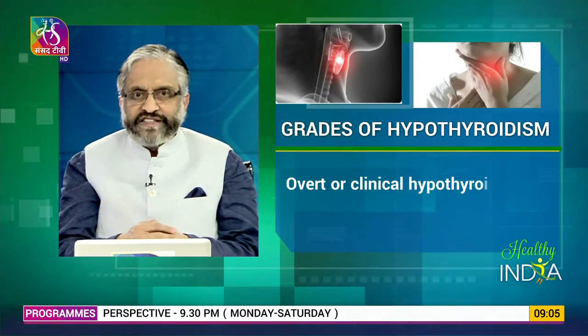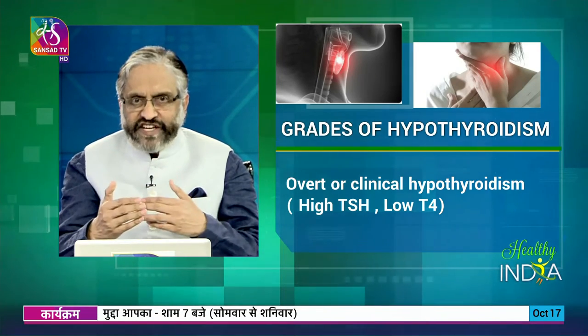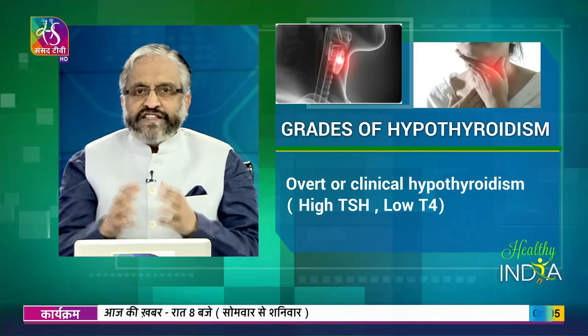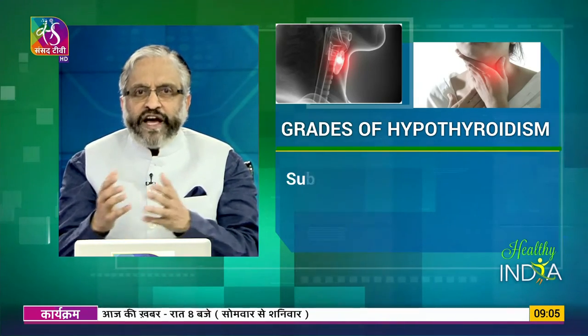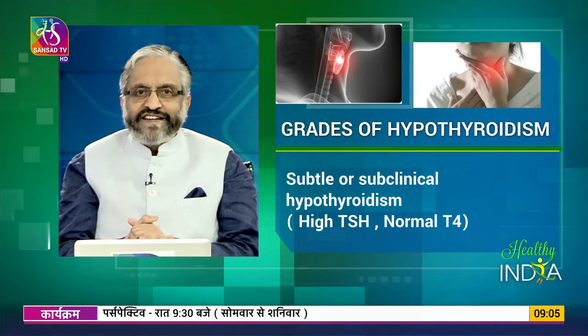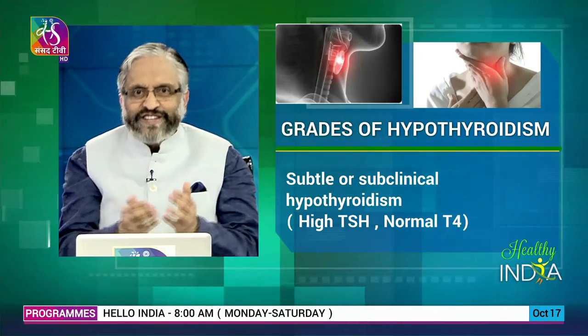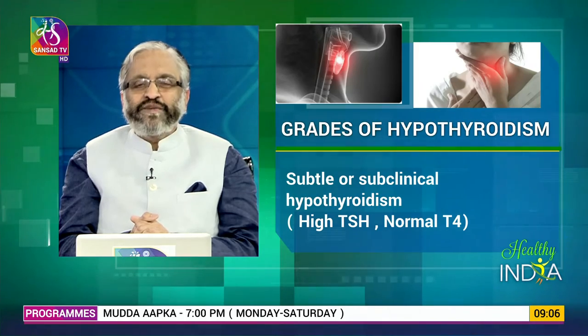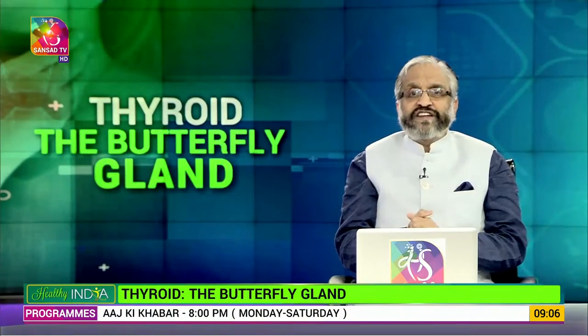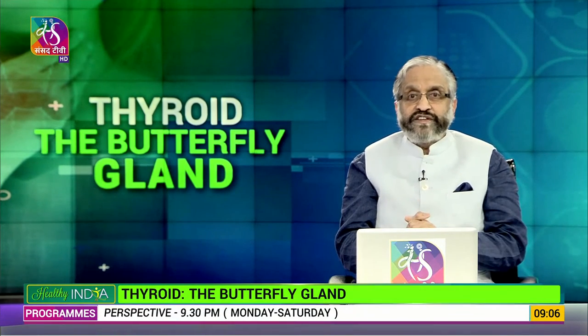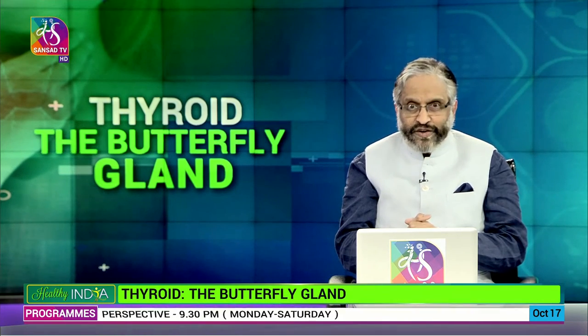That means about 1 in 10 Indians could have some form of hypothyroidism. Hypothyroidism is more common in women compared to men. There are two grades: overt hypothyroidism, where there is an actual abnormality in T4 and TSH, and subclinical hypothyroidism, a more subtle form where it may be a biochemical abnormality alone and may not always have clinical implications. When we include subclinical, the prevalence of thyroid disorders goes up quite significantly.